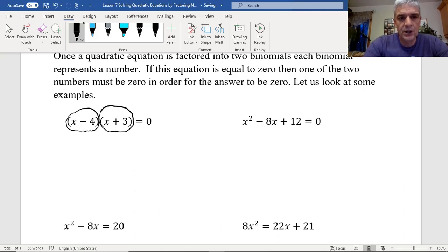If you think about it, 4 times 0 equals 0. 8 times 0 equals 0. 122 times 0 equals 0. The only way we can get, through multiplication, a 0 is if one of these two values equals 0.